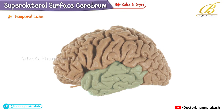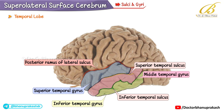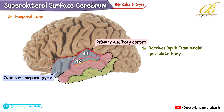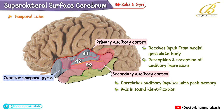The temporal lobe contains the posterior ramus of the lateral sulcus, superior temporal sulcus, and inferior temporal sulcus, dividing it into the superior, middle, and inferior temporal gyri. The posterior part of the superior temporal gyrus contains the primary auditory cortex (Brodmann areas 41 and 42), which receives input from the medial geniculate body and is responsible for the perception and reception of auditory impressions. The rest of the superior temporal gyrus contains the secondary auditory cortex (area 22), which correlates auditory impulses with past memory and aids in sound identification.